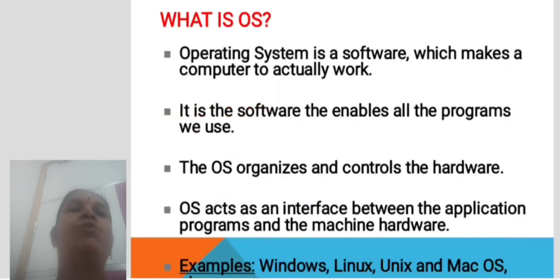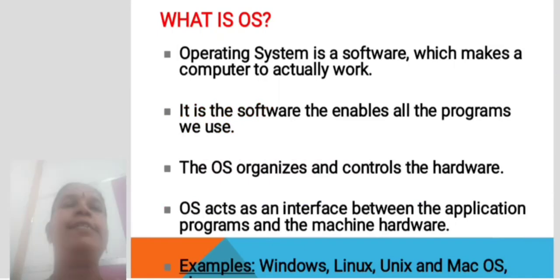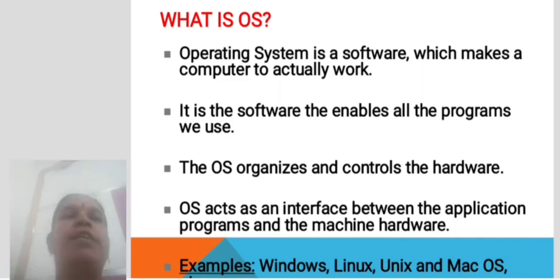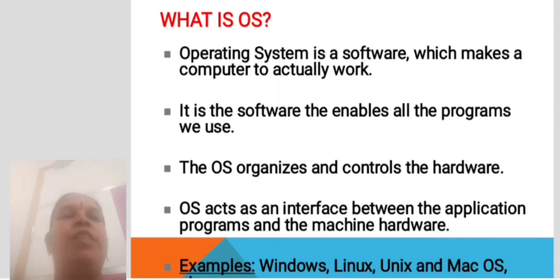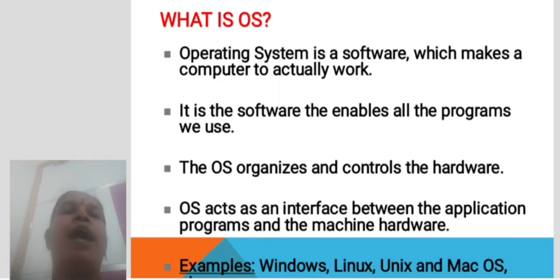What is an OS? An operating system is software which makes a computer actually work. It is software that enables all the programs we use. The OS organizes and controls the hardware. The OS acts as an interface between application programs and the machine hardware. Examples include Windows, Linux, Unix, and Mac.